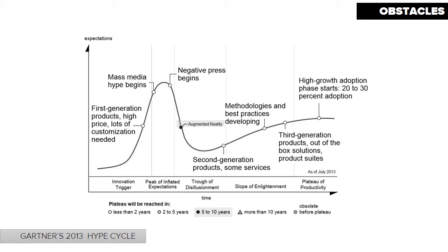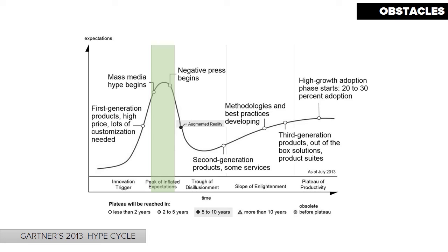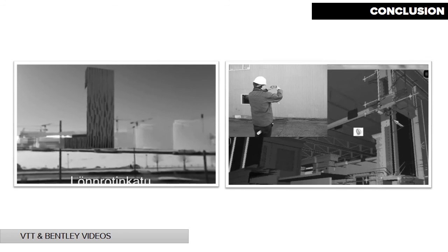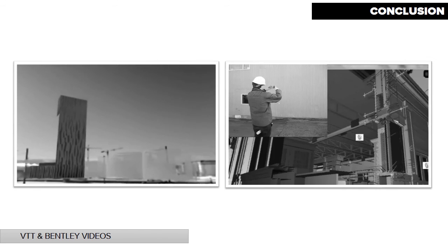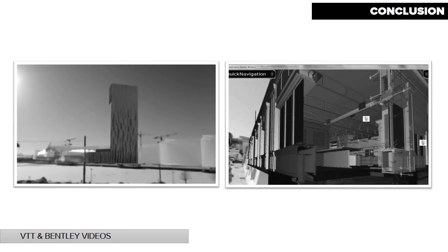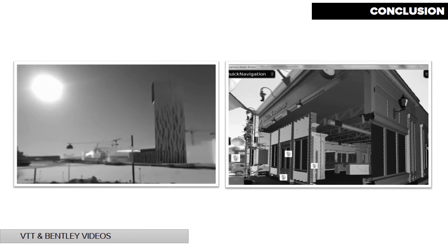ICT research and consulting company Gartner, in July 2013, placed AR on a downward trajectory towards the trough of disillusionment after having reached the peak of inflated expectations in 2011. Professional users trialling augmented reality for the first time in 2014 will be frustrated by its technological challenges. But those that persist and work through the hurdles will likely reap benefits in 5–10 years' time when this technology reaches the predicted plateau of productivity. The road ahead is long, but mobile augmented reality applications will trickle into architectural practice and soften the boundaries between the virtual and the real.